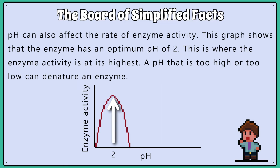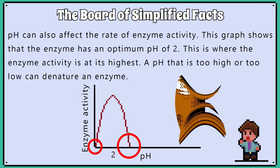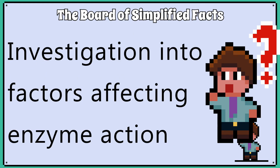pH can also affect the rate of enzyme activity. This graph shows that the enzyme has an optimum pH of 2, where the enzyme activity is at its highest. A pH that is too high or too low can denature an enzyme. In the next lesson, we will look at a WJEC-specified practical involving measuring the rate of enzyme activity against temperature.